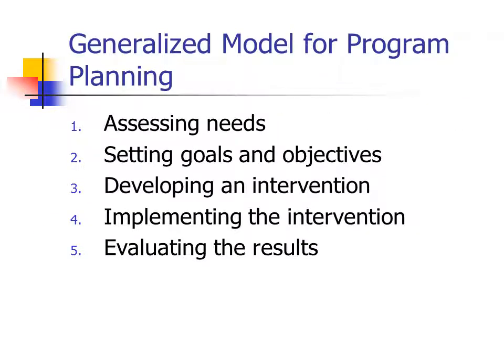Just to refresh your memory, here are the five steps involved with the generalized model. It's called a generalized model because these steps appear in some way, shape, or form in all of the other models. Those steps are: assessing the needs of the priority population, setting goals and objectives to meet those needs, developing your interventions to meet your goals and objectives, implementing the interventions, and finally evaluating the results.